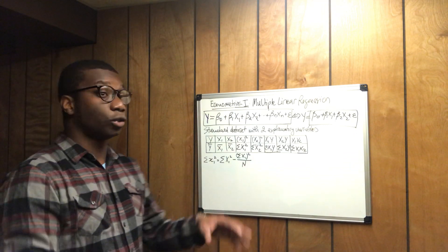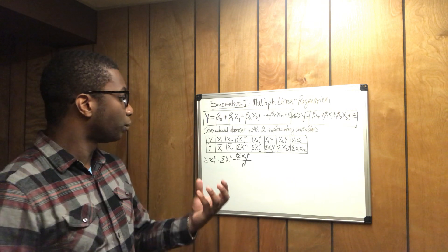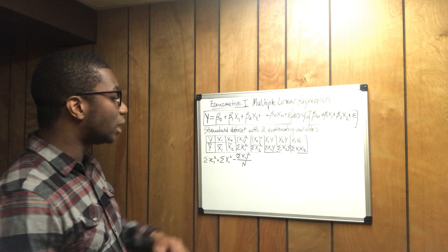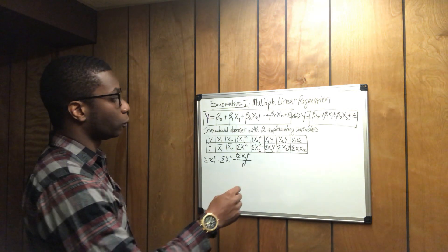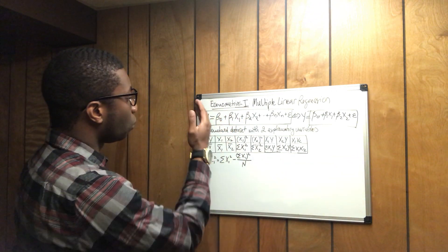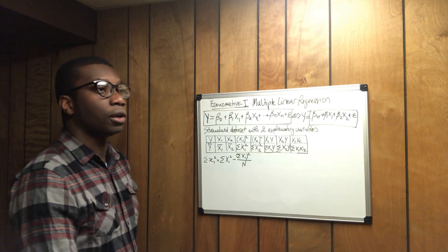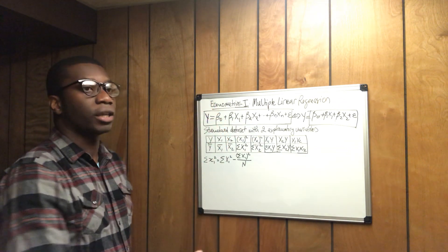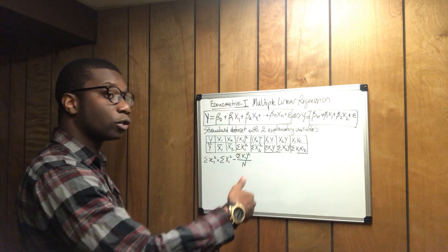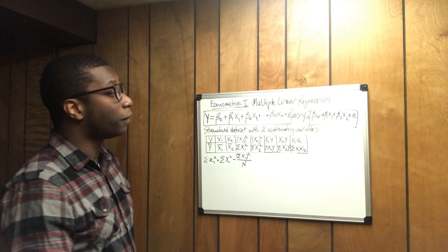Today we're going to learn how to understand the dataset for two explanatory variables and how to get all the observations we need in order to determine the values for each slope. As you know, y is the dependent variable, beta 0 is the intercept, beta 1 is the coefficient for the first explanatory variable, and x1 is the first explanatory variable. Beta 2 is the coefficient for the second explanatory variable.